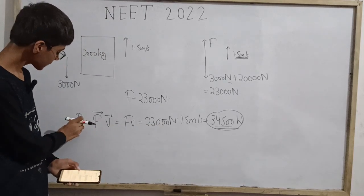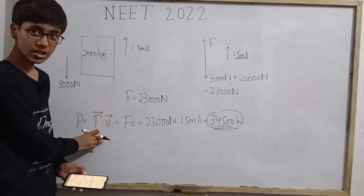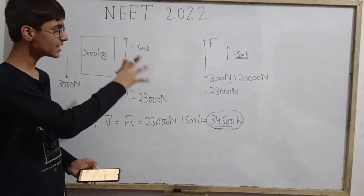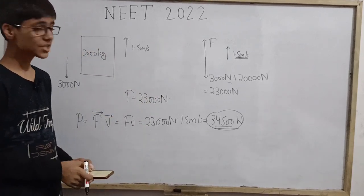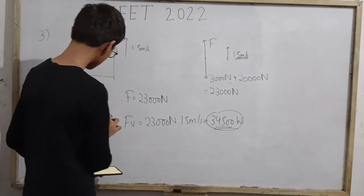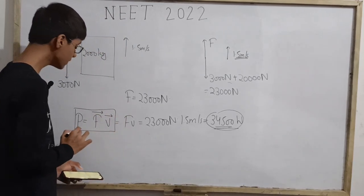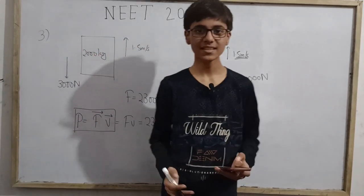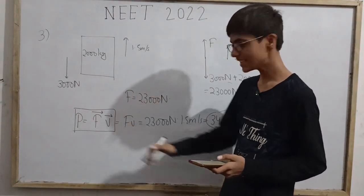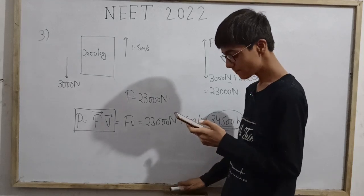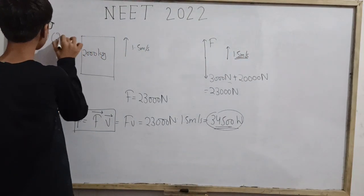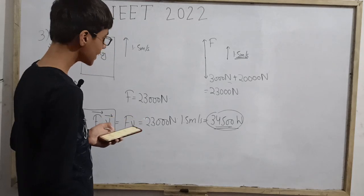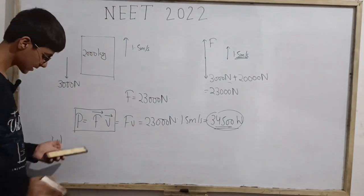Power can also be written as work done divided by time — that is an important formula to remember. The correct answer here is 34,500 W, which is the second option. So this third question is solved. Now let's look at question 18 as given, which is our fourth question.